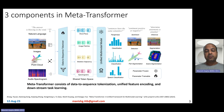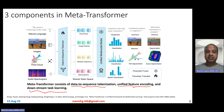There are three components in MetaTransformer: first, data-to-sequence tokenization; second, unified feature encoding; and third, modality-specific heads for downstream task learning.